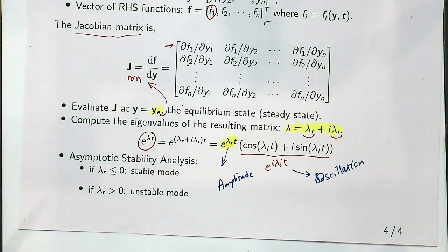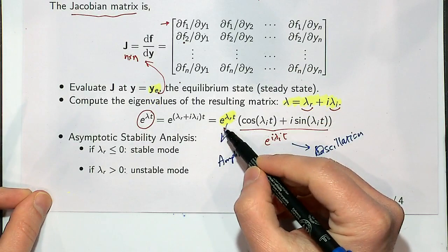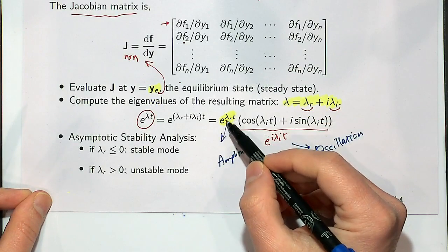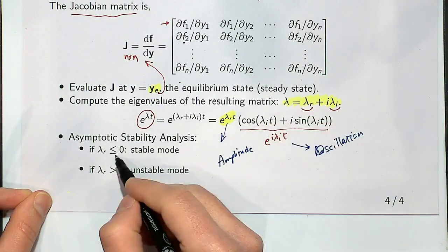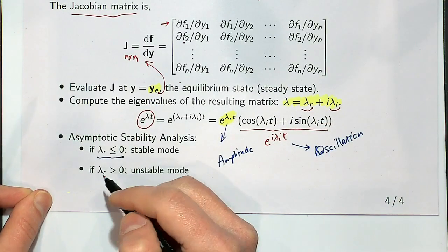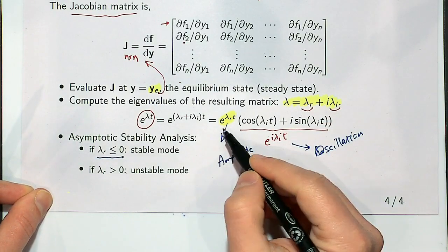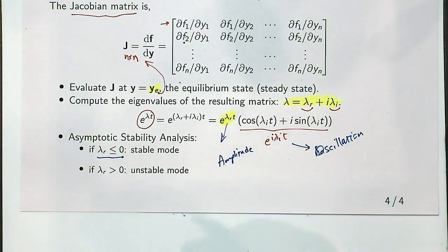The key insight is: find the Jacobian of the system, compute its eigenvalues, and based on the real part of the eigenvalues, determine if the system is stable or unstable. If the real part lambda_r is negative, the amplitude e^{lambda_r * t} decays over time — the system is stable. If lambda_r is positive, the amplitude grows and the equilibrium is unstable.